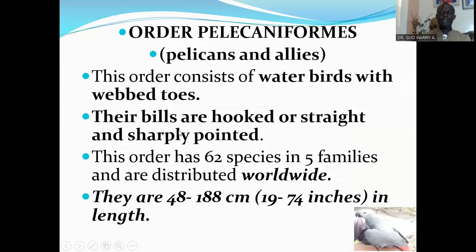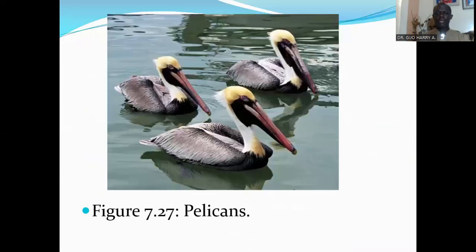The next order is Order Pelecaniformes, which consists of the pelicans and allies. This order consists of water birds with webbed toes. Their bills are hooked or straight and sharply pointed. This order has 62 species in five families and are distributed worldwide. They are 48 to 188 centimeters in length. Here are the pelicans.